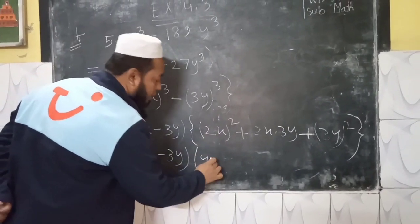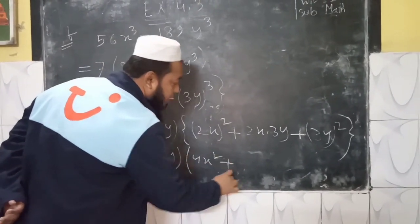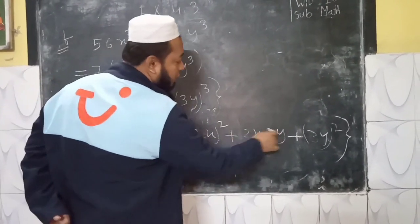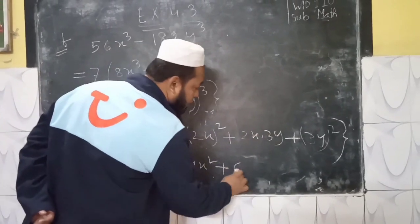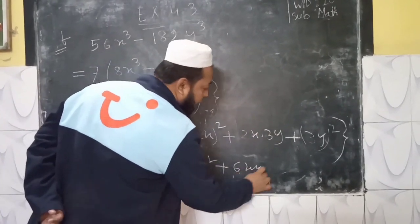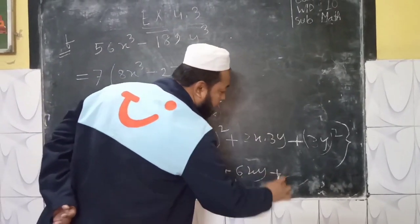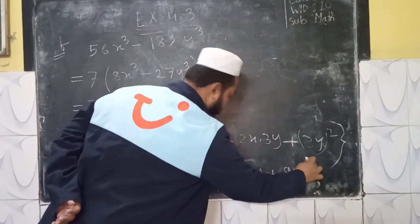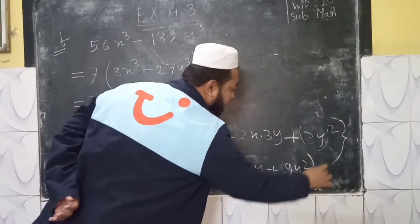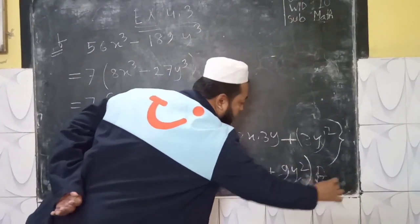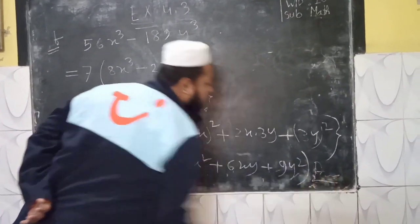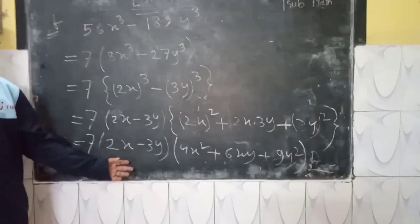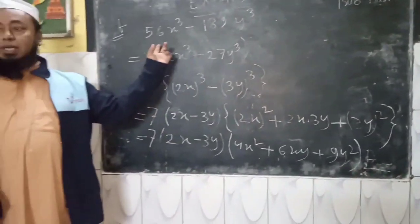4x square plus 2xy plus 3y square. How did you say that? This is an answer. Answer. Do you have a certain answer? Yes, sir. Here we go.